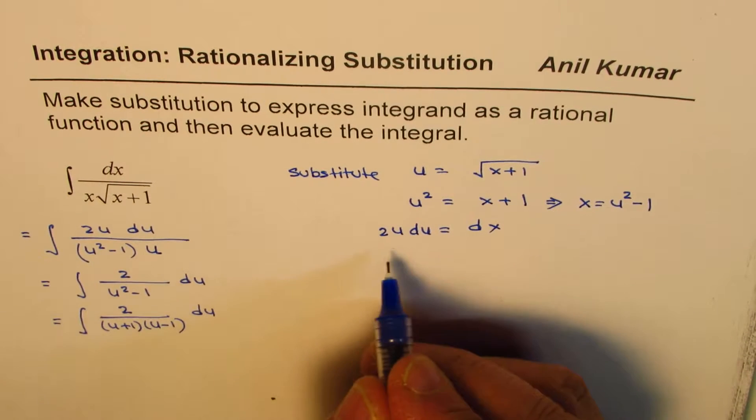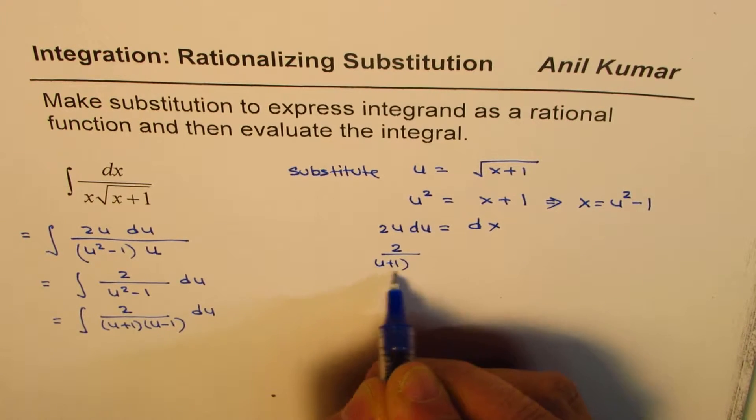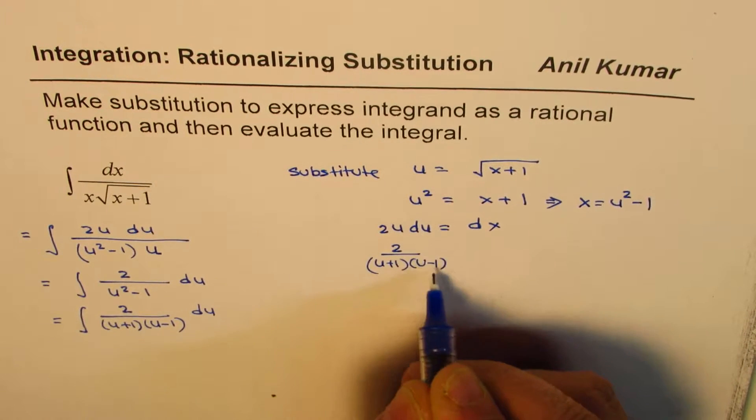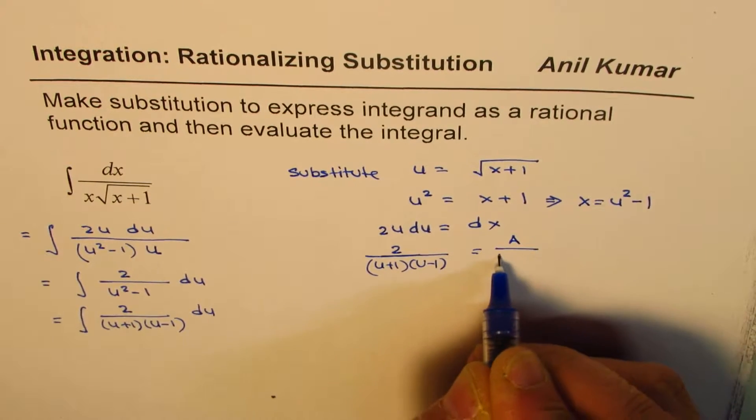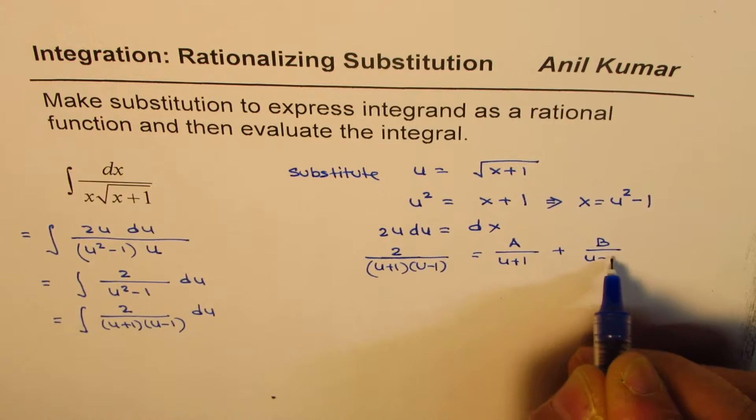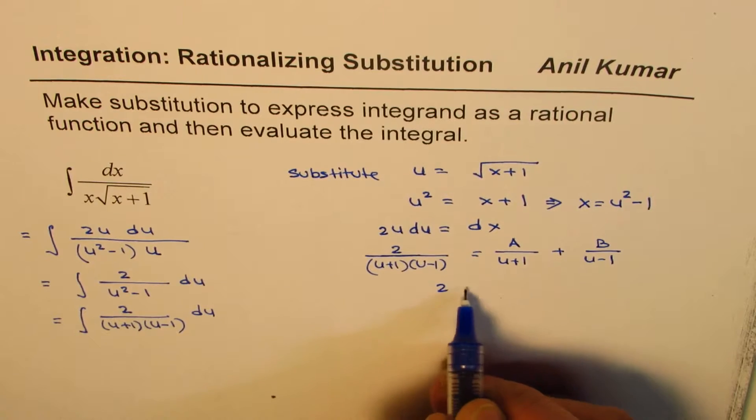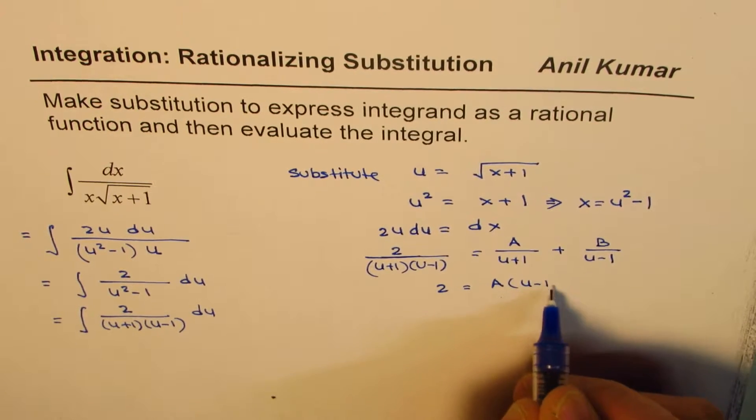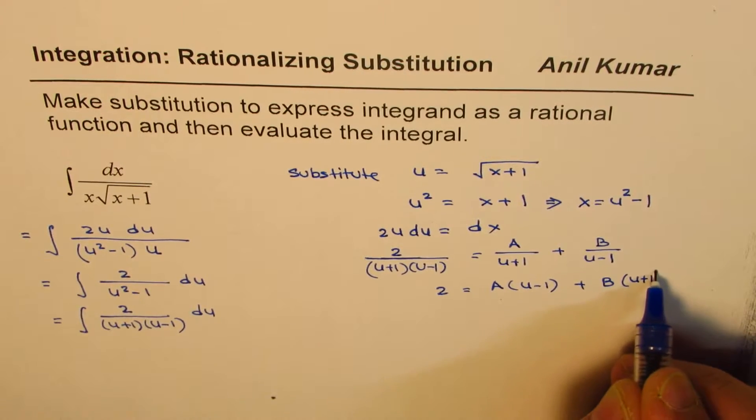So we what we are saying here is that let 2 over u plus 1 times u minus 1 equals to a over u plus 1 plus b over u minus 1. If I multiply by u plus 1 u minus 1 I get 2 equals to a times u minus 1 plus b times u plus 1.